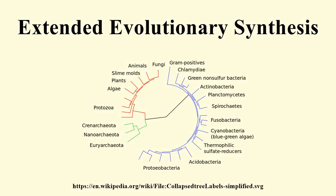The extended evolutionary synthesis is an extension of the modern synthesis of evolution, which revisits the relative importance of different factors at play in evolutionary theory, revisits several assumptions of the original synthesis, and augments the modern synthesis with additional causative factors in evolution. The extended synthesis includes concepts and mechanisms such as multilevel selection theory, transgenerational epigenetic inheritance, niche construction, and evolvability.